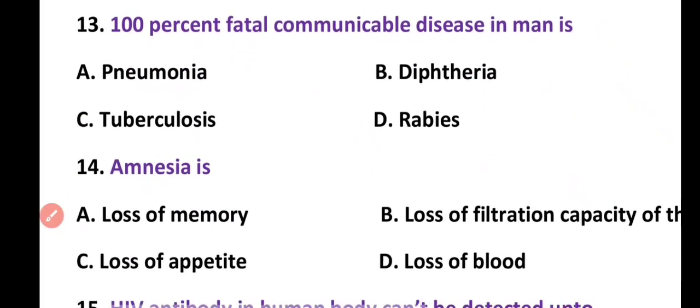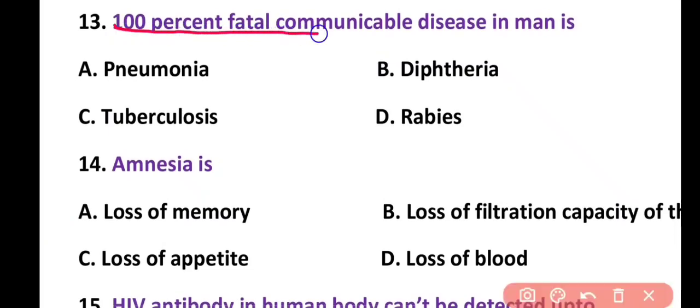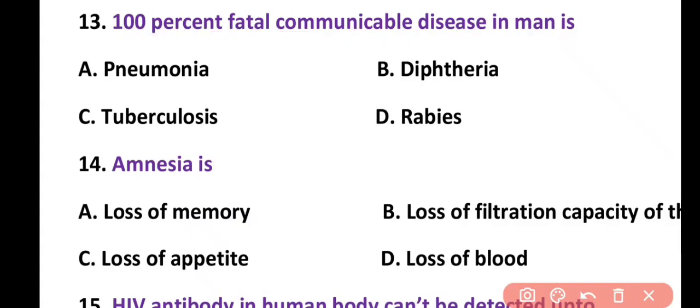Question 13. 100% fatal communicable disease in humans is: pneumonia, diphtheria, tuberculosis, or rabies. Correct answer is option D. Rabies disease is 100% fatal communicable disease, and if left untreated it can be disastrous. Almost 55,000 people die every year due to rabies disease.